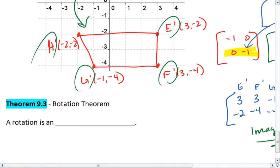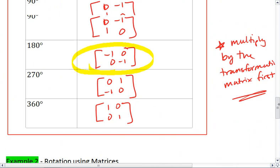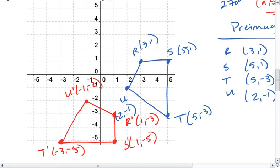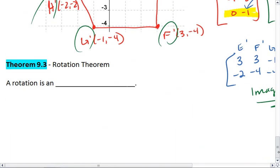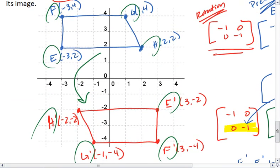What we should have realized, both with this example and our first example, is that when we rotate an object, it stays the same size and shape, meaning a rotation is an isometry. It preserves length and angle measure, so our image is always congruent to our original polygon.